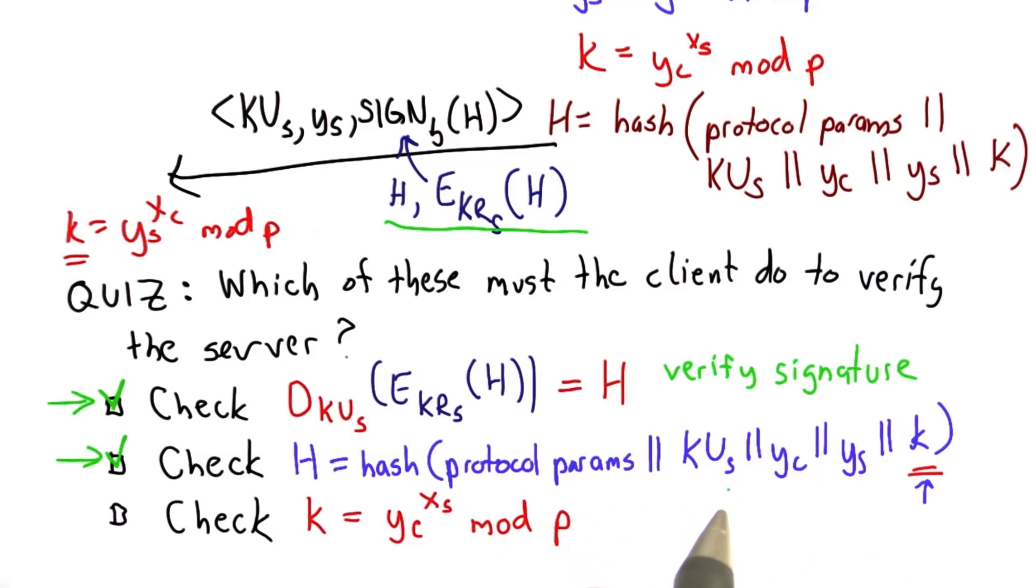We're going to recompute this hash. Note that the hash is one way. We can't use the hash to learn the key, but we can compute the key like this for the client and then check that the key in the hash matches that by computing the hash.